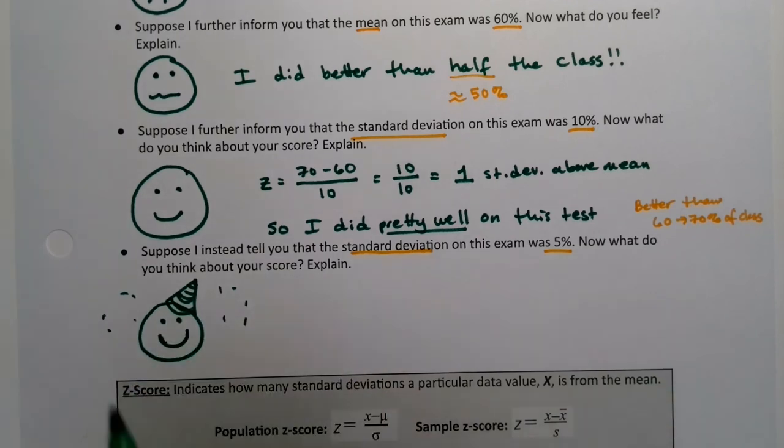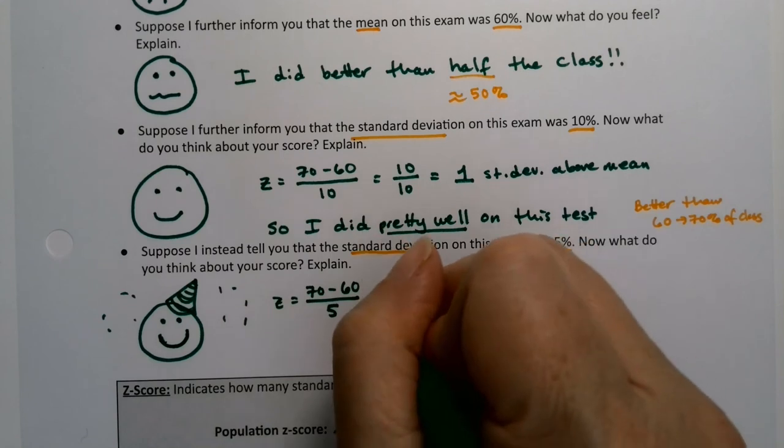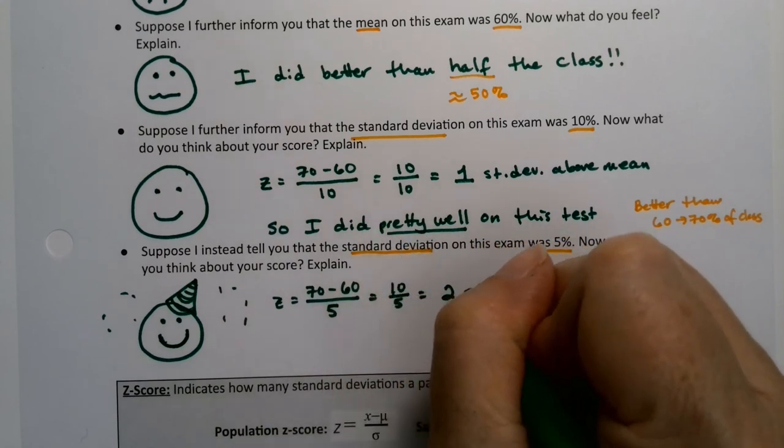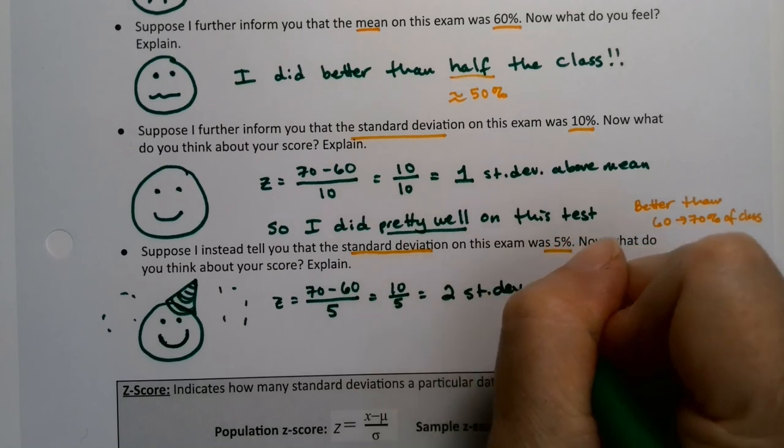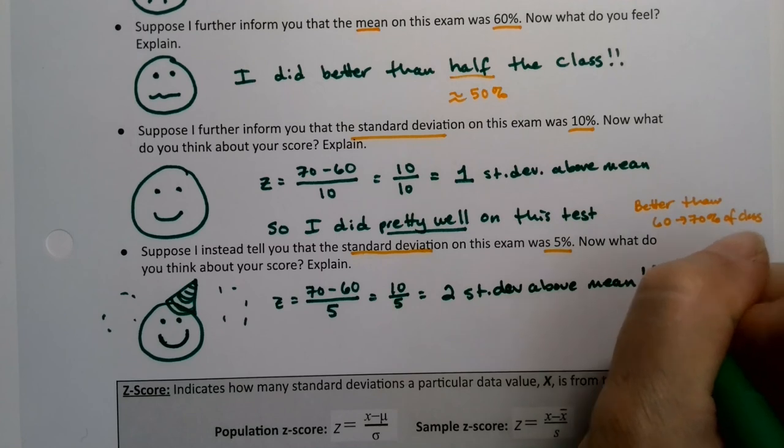Why? Well, you scored 70. The mean was 60, but the standard deviation was five. So you're 10 above the mean, which means you're two standard deviations above the mean. Woot.